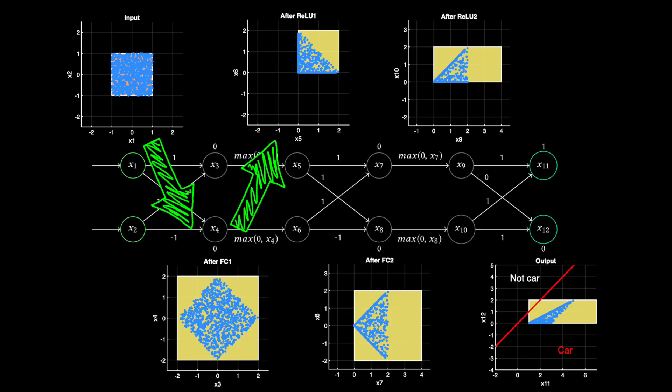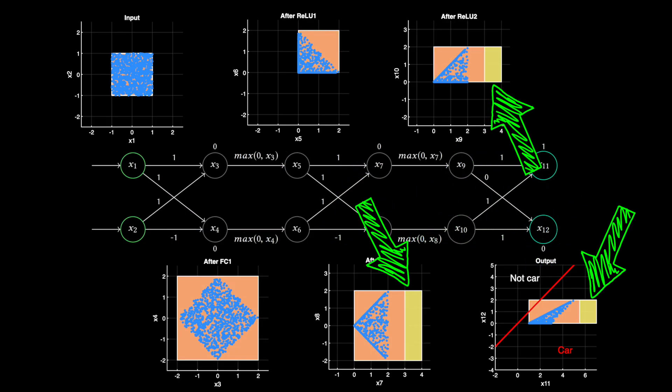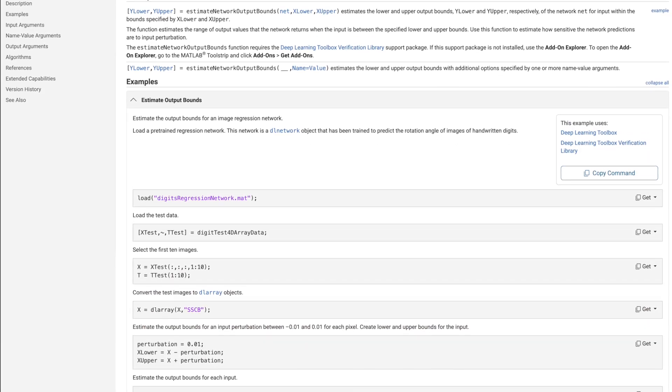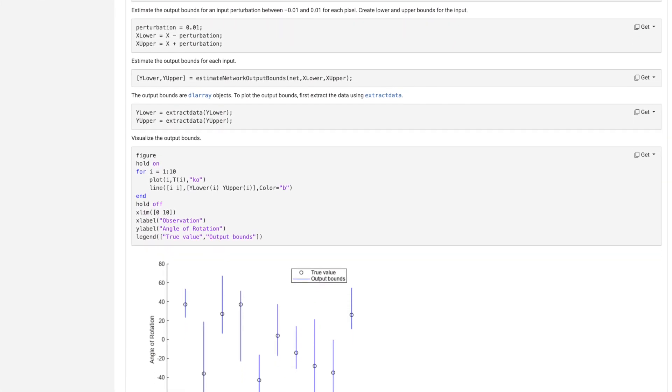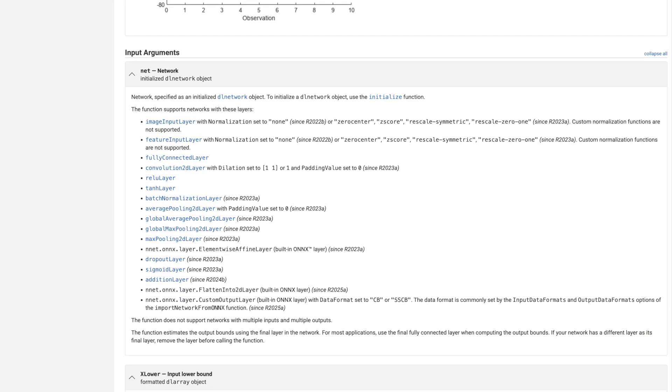So instead of just passing intervals forward, modern verification algorithms like DeepPoly and Crown also propagate information backward from the output constraint. And this backward pass lets them tighten the bounds at each layer, like I'm showing here with the orange boxes, squeezing the intervals closer to the true feasible region. And this is what is implemented within the MATLAB function estimate network output bounds from the Deep Learning Toolbox Verification Library. And I've linked to an example below showing you how this function works on a more complex neural network. In fact, you can see from the documentation all of the different layer types that this function supports. So it's a pretty powerful way to verify your deep neural networks.